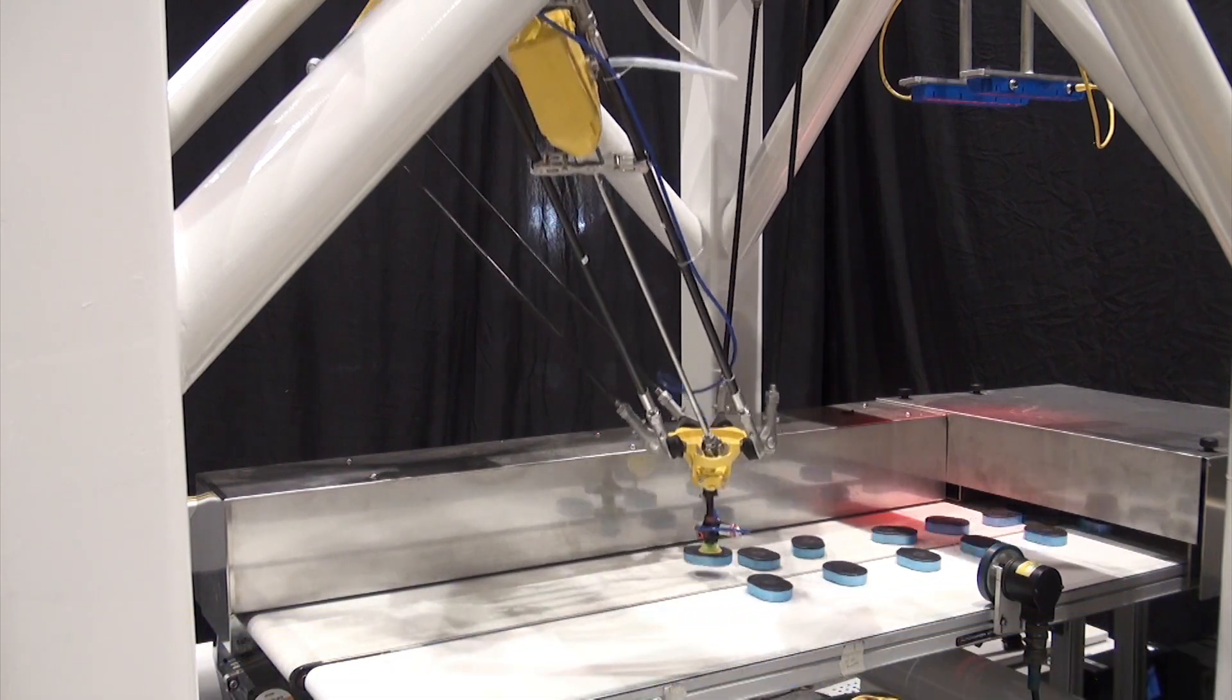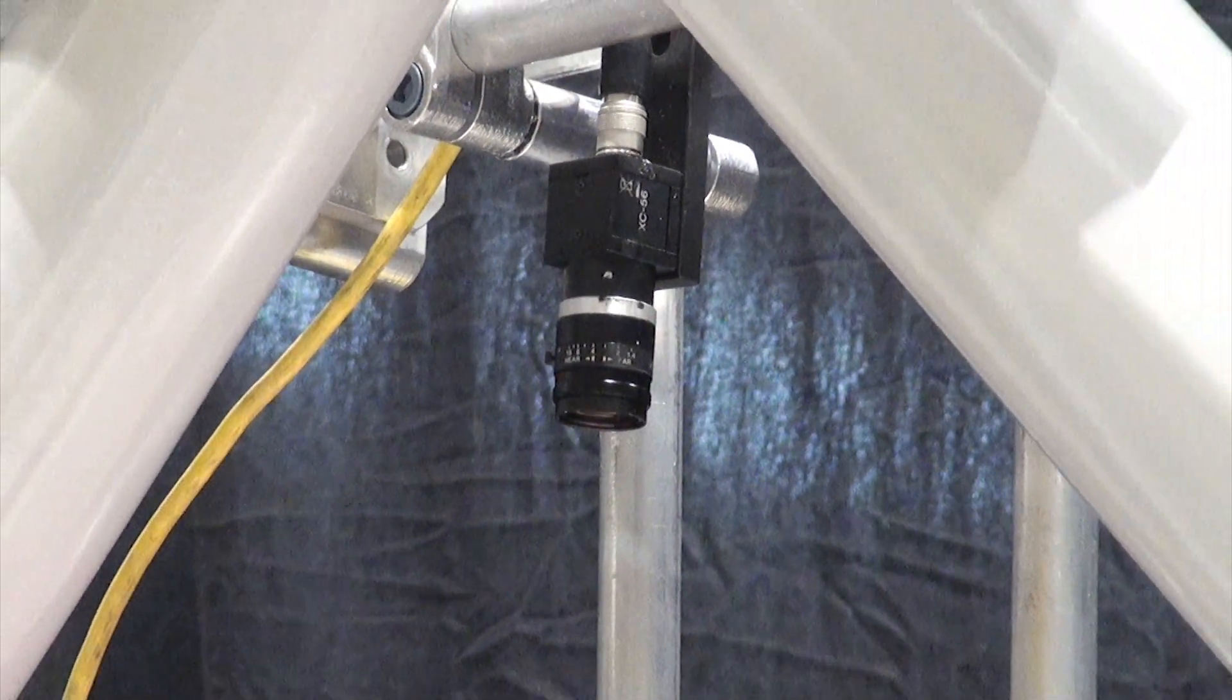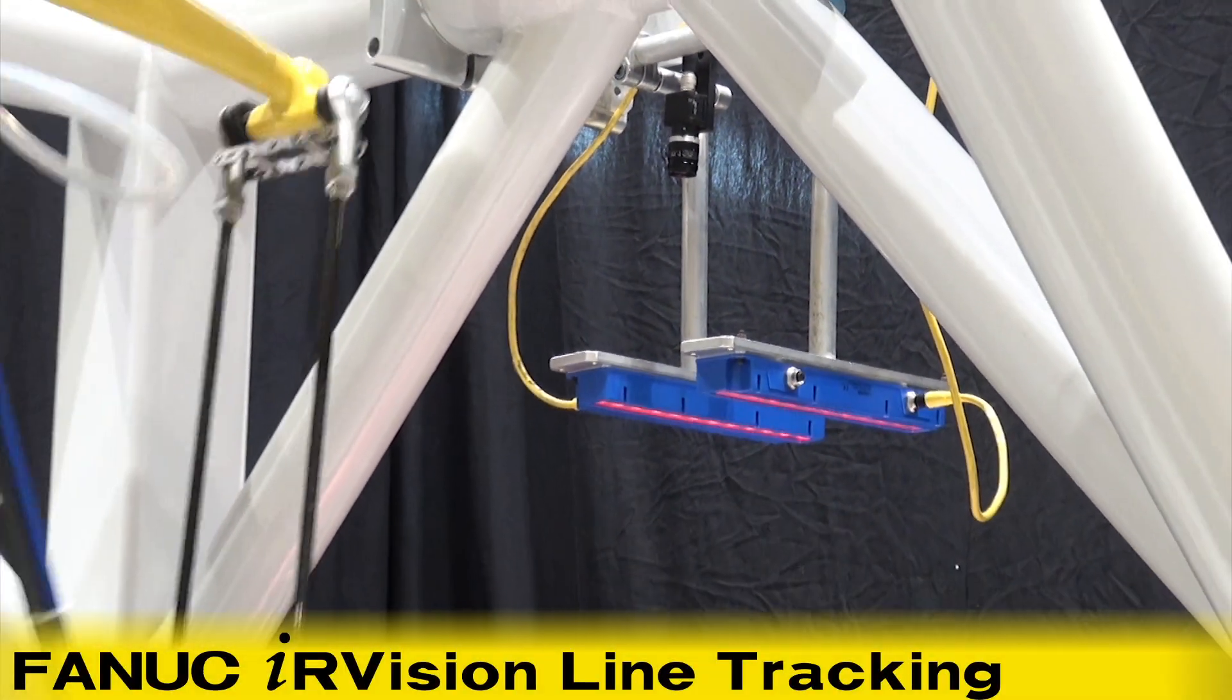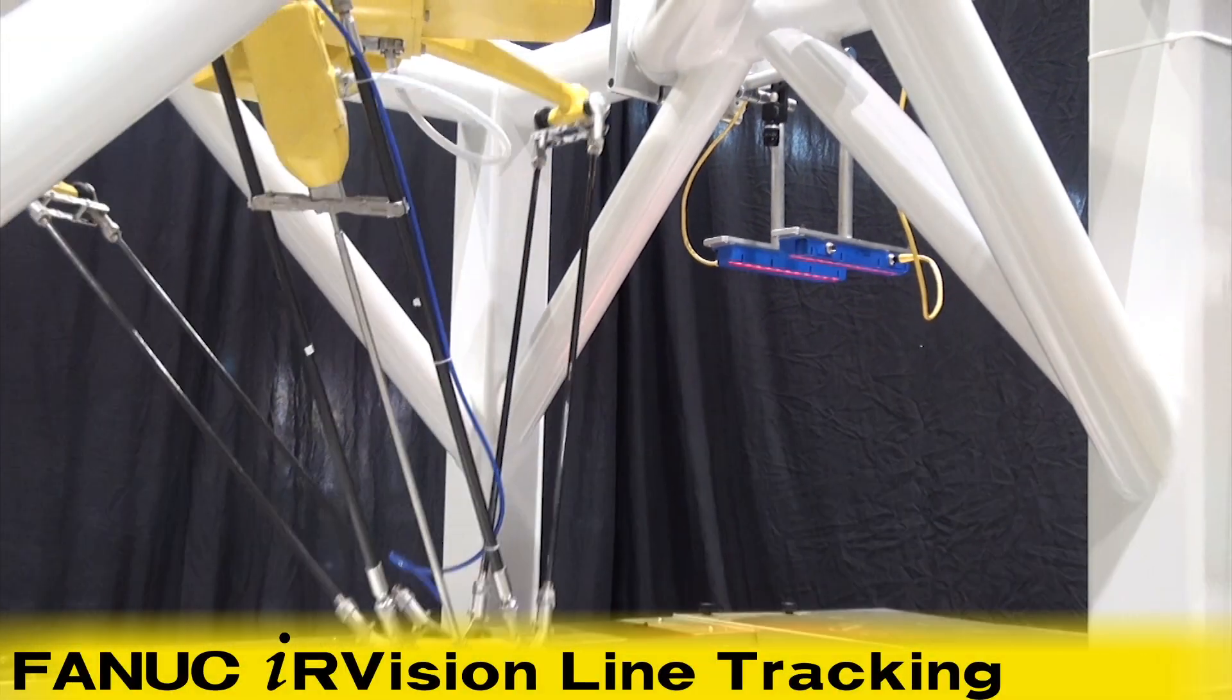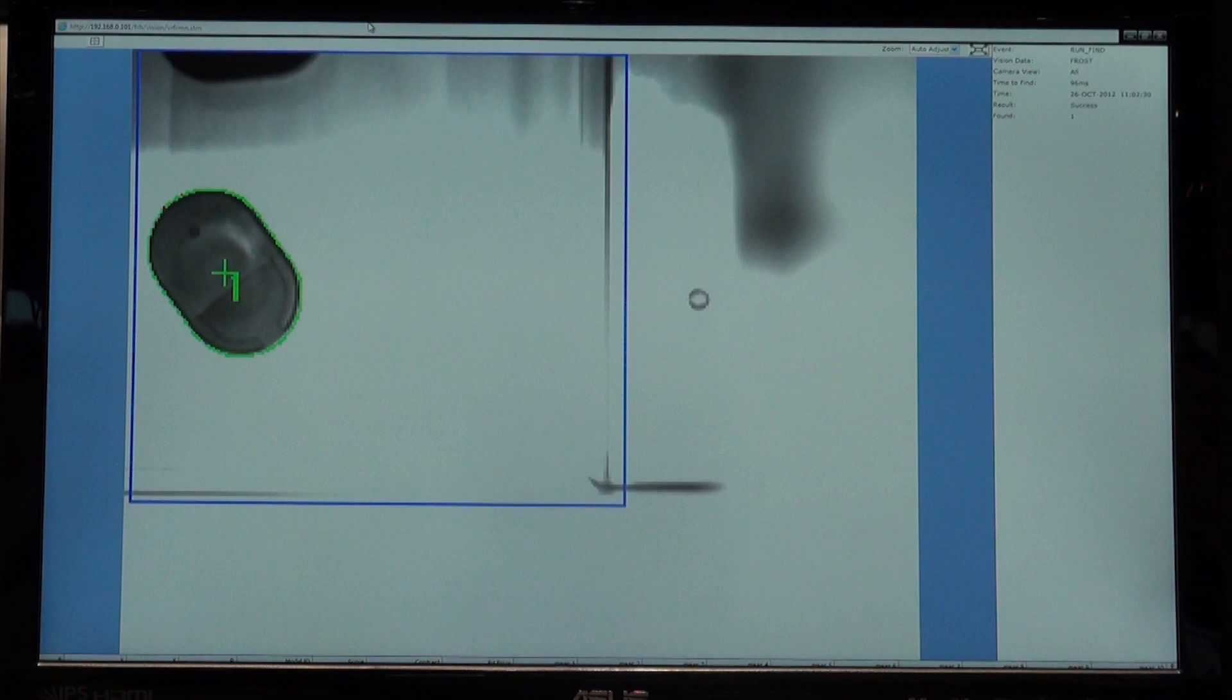The robot does this through a combination of its single-axis wrist, which offers speeds up to 3500 degrees per second, and through FANUC's IR-Vision line tracking system. This monitor displays what the robot's camera is seeing.